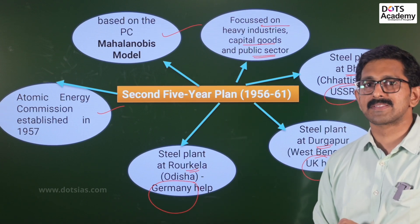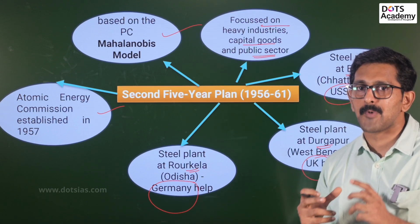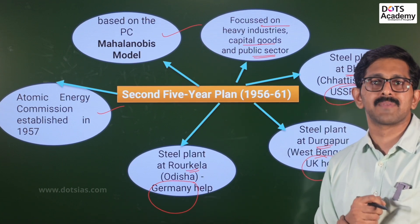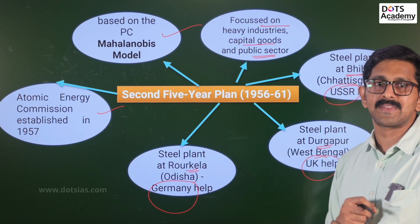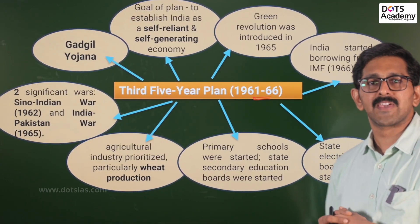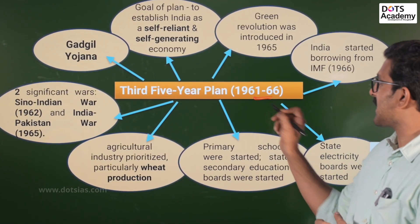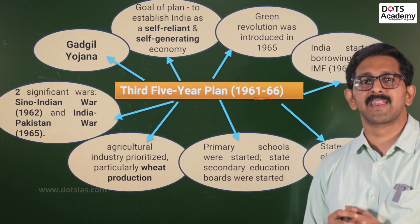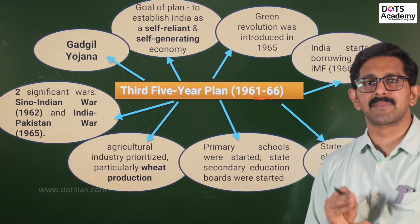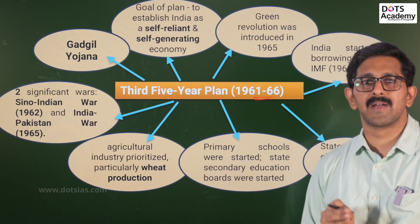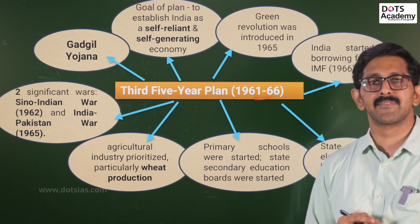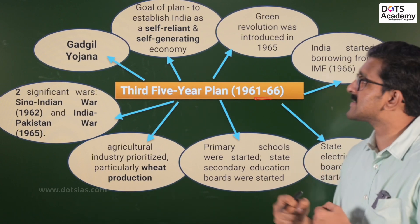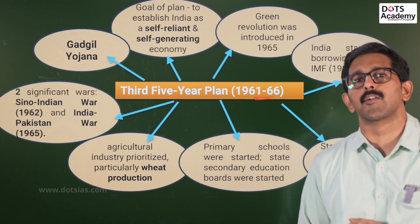Now we discuss the third five-year plan, covering 1961 to 1966. In the first plan we worked on the primary sector, the second on the manufacturing sector. The third five-year plan aimed at building a self-reliant and self-generating economy.